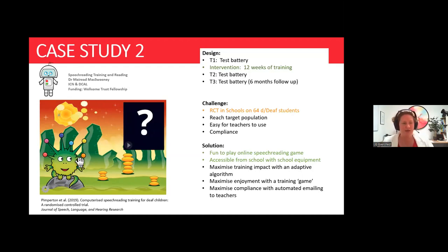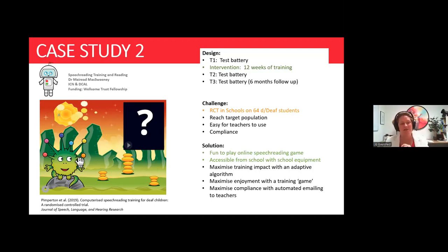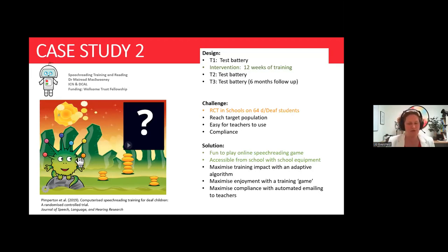The gamification techniques in this project included giving instructions in a way accessible to students who can't hear or read. We couldn't speak instructions — they can't hear; we couldn't write them — they can't read. So we animated buttons and used hand gestures so the alien would look and open his mouth — the animations taught the kids how to play. There was also an overall narrative, and a trophy cabinet for motivation to complete the protocol.